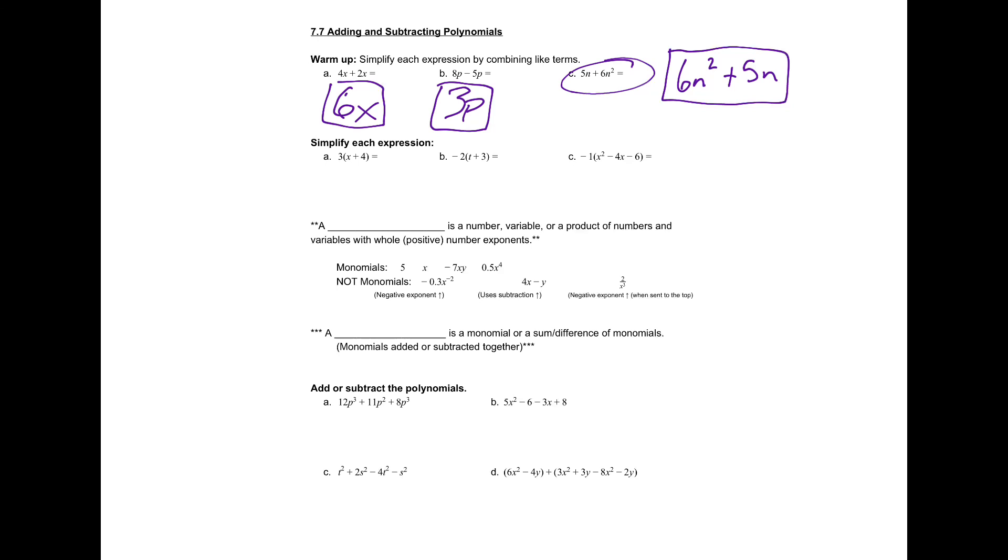The next part is all about distributing. So go ahead, give those a shot, pause the video, and then check your work. Alright, so you should have 3x plus 12 and negative 2t minus 6 for those first two. So remember when you're distributing, you just multiply each of those things by 3.